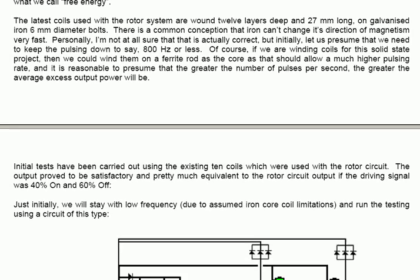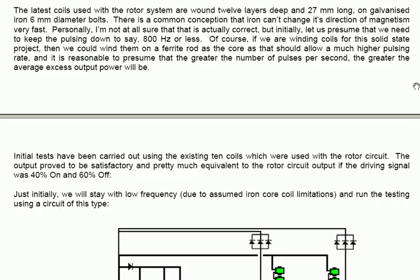The latest coils used with the rotor system are wound 12 layers deep and 27 millimeters long on galvanized iron 6 millimeter diameter bolts. There's a common conception that iron can't change its direction of magnetism very fast. Personally I'm not at all sure that that's actually correct but initially let us presume that we need to keep the pulsing down to say 800 pulses per second or less. Of course if we're winding coils for this solid state project then we could wind them on a ferrite rod as the core as that should allow a much higher pulsing rate and it's reasonable to presume that the greater number of pulses per second the greater the average excess output will be.